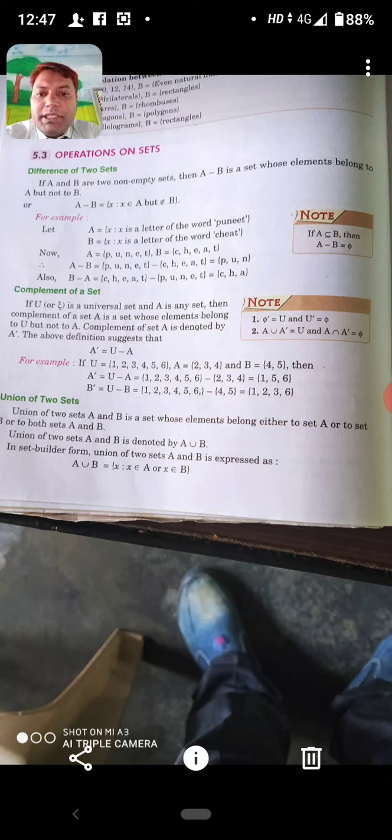If A and B are two empty sets, then A minus B is a set whose element belongs to A but not to B. It means A minus B, the difference of two sets, equals X such that X belongs to A but not belongs to B. It means element of A should not present in set B.